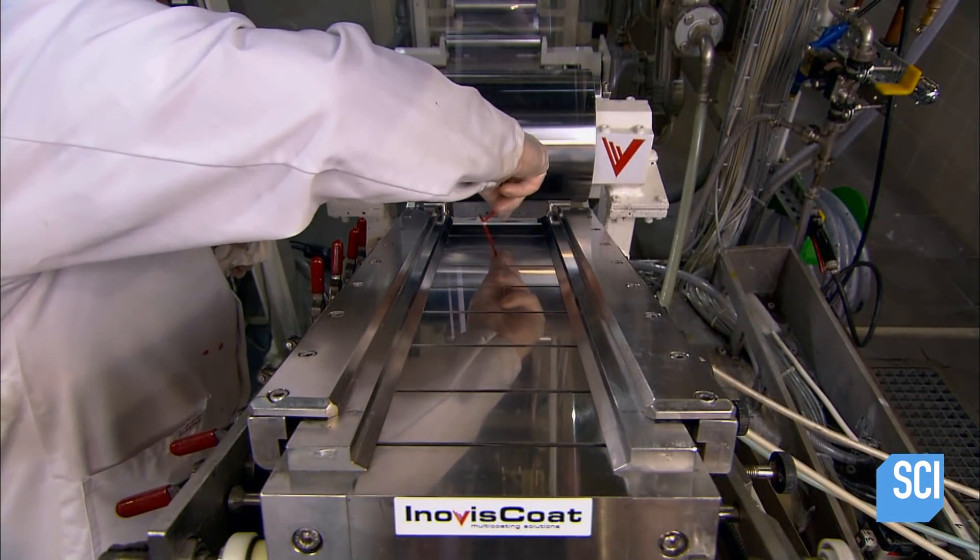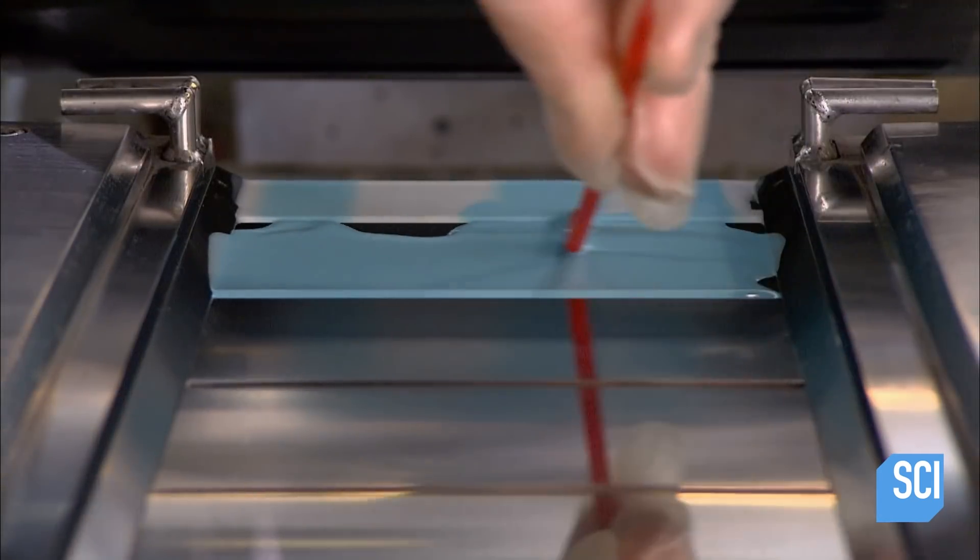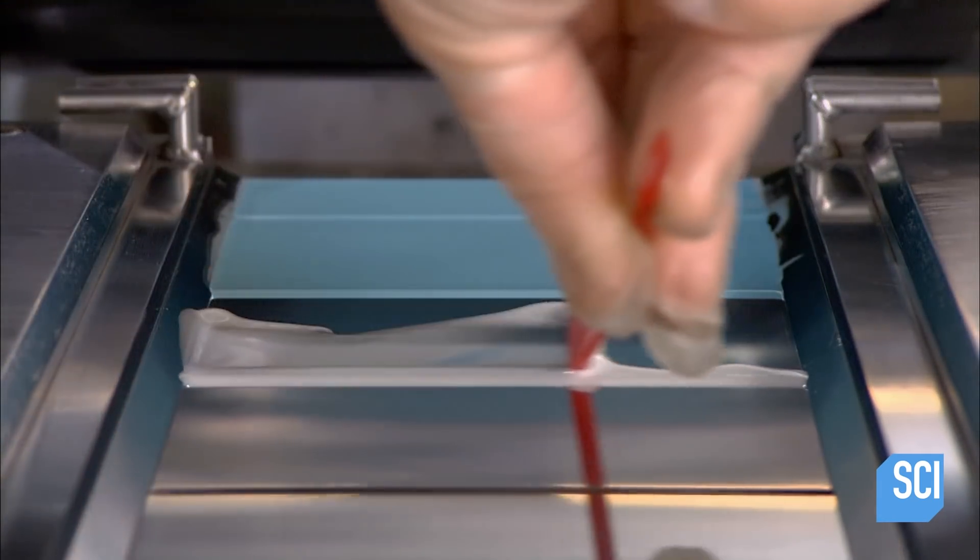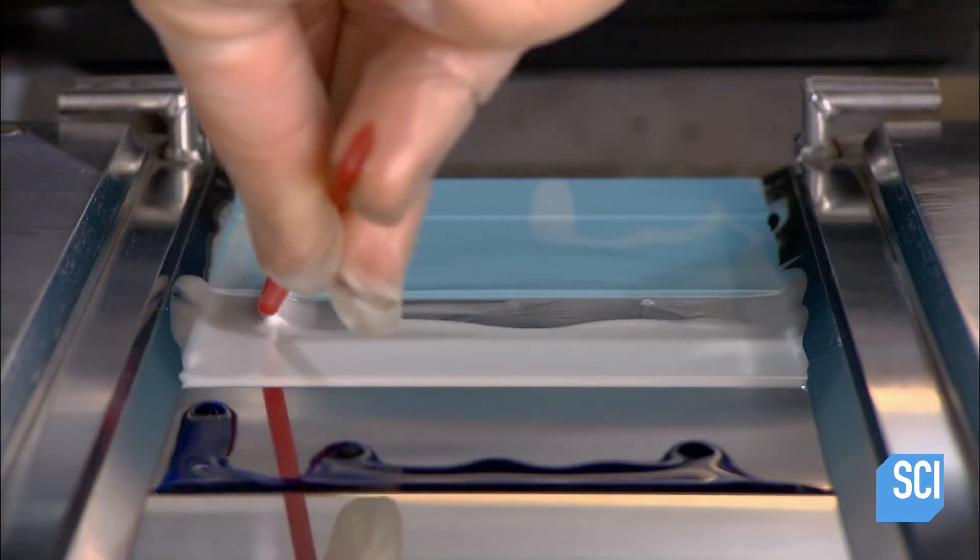The coating is also done in the dark, so this worker demonstrates the process for our camera on a small research machine. Liquid photochemicals and dyes flow onto the surface of the plastic film.